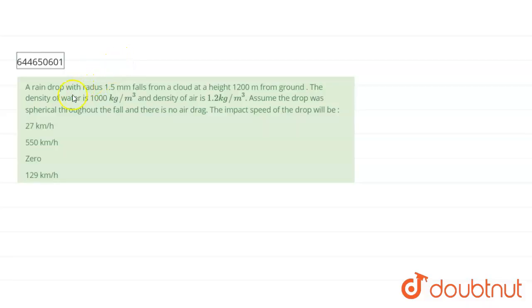Hello students, our question states that a raindrop with radius 1.5 millimeter falls from a cloud at height 1200 meters from the ground. The density of water is 1000 kg/m³ and density of air is 1.2 kg/m³. Assume the drop was spherical throughout the fall and there is no air drag. The impact speed of the drop will be. Here four options are given.